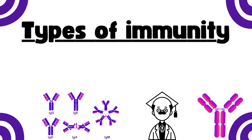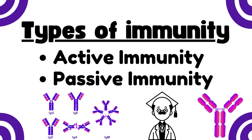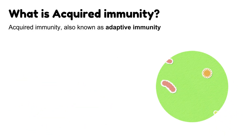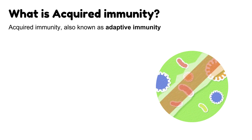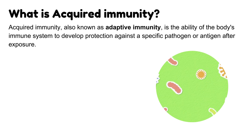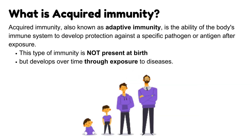Types of Immunity: Active Immunity and Passive Immunity. Acquired Immunity, also known as Adaptive Immunity, is the ability of the body's immune system to develop protection against a specific pathogen or antigen after exposure. This type of immunity is not present at birth but develops over time through exposure to diseases.